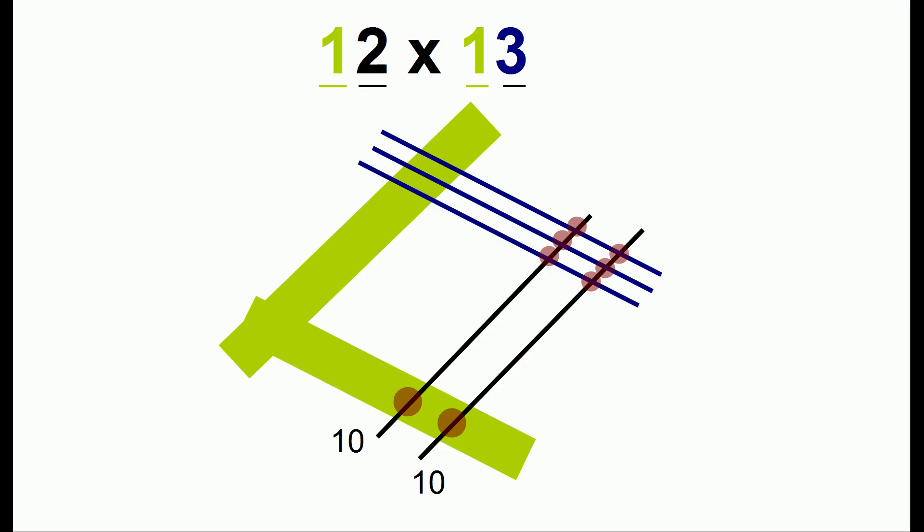Now we'll start counting the number of dots. As before, we have 6 dots here on the right. We've created 3 intersections between a thin line and the 10 line, which gives us 10 each time.